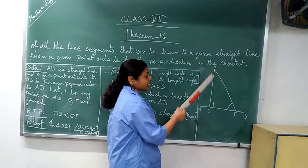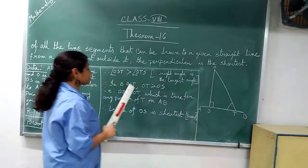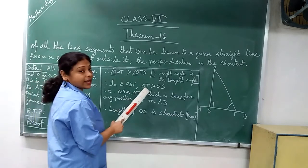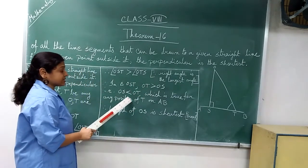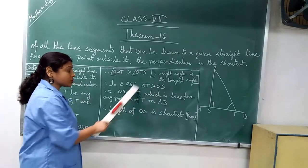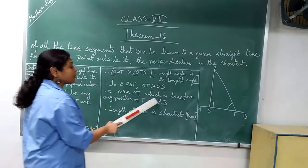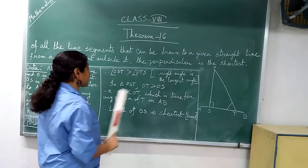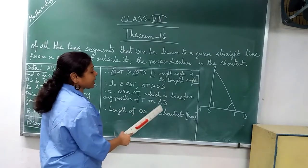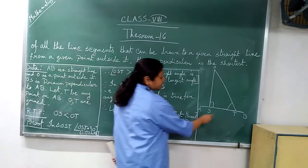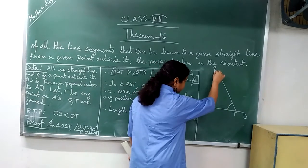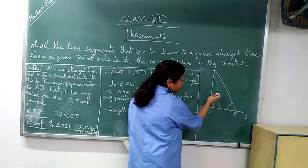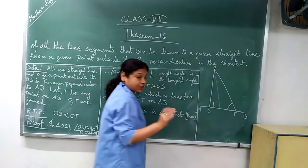So that is why we can write: OT greater than OS. That means OS less than OT. Just opposite. Which is true for any position of T on AB. That means if we take a point over here, then also this line is greater than this line.